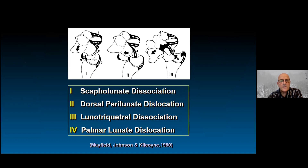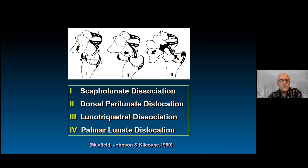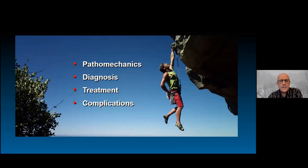The seminal work was done by Mayfield and Johnson-Glaicoin in 1980. They identified a destabilization pattern in which the first phase is scapholunate dissociation, then a dorsal perilunate dislocation, third the lunotriquetral dissociation, and fourth the rest of the carpus pushes the lunate palmarly — a lunate dislocation.